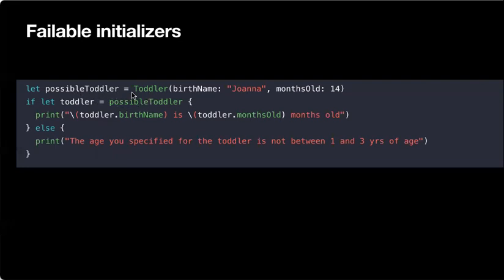So here, possibleToddler is created by passing 14 months. Then using if let toddler = possibleToddler — because it returns an optional — if you get an actual instance that's not nil, we print it. Otherwise, we print: 'The age you specified for the toddler is not between one and three years old.'